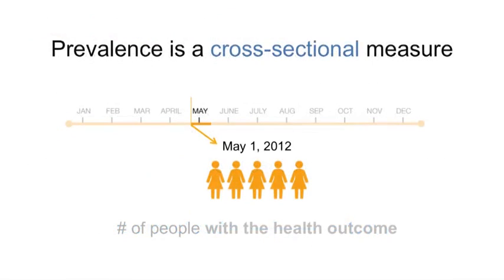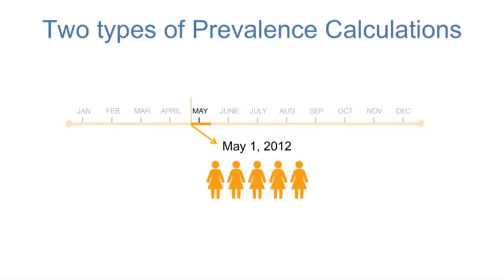Prevalence is often referred to as a cross-sectional measure because it tells us about the number of people with the health outcome at one slice in time. Prevalence can be viewed as a slice through the population at a point in time in which it is determined who has the disease or health outcome and who does not.